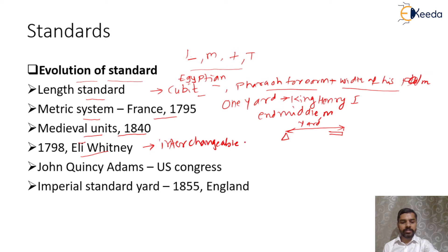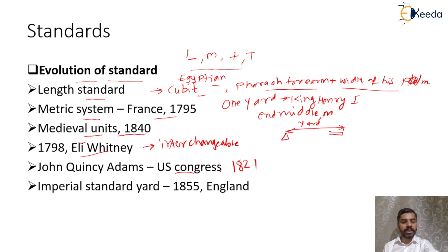This led to standardization of manufacturing activities to achieve interchangeability. Based on his four years of investigation, a metric system was proposed and a report was submitted to the U.S. Congress in 1821, considered a modernization of the measuring system. In 1860, to keep pace with scientific inventions, a need arose for better metric standards. In 1855, the Imperial Standard Yard was developed in England, considered very accurate for that era.